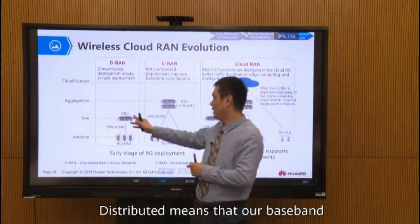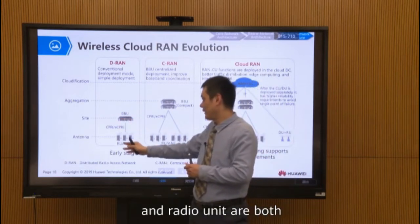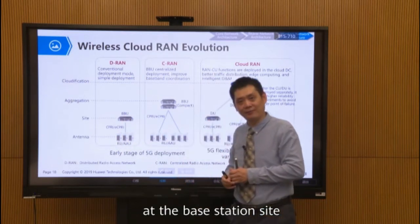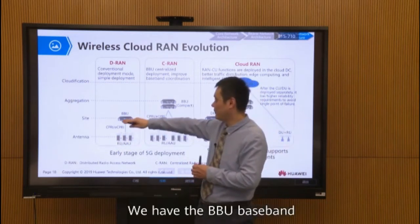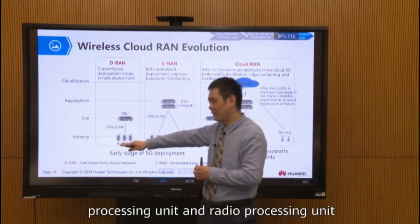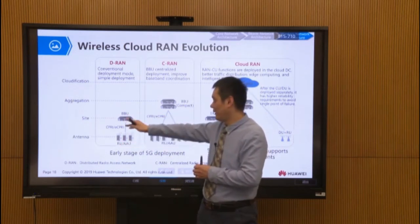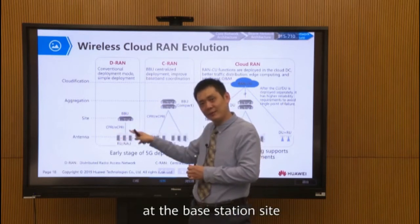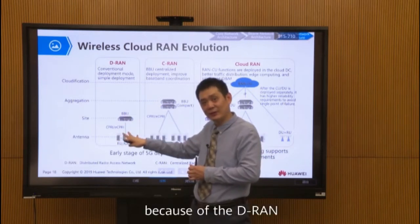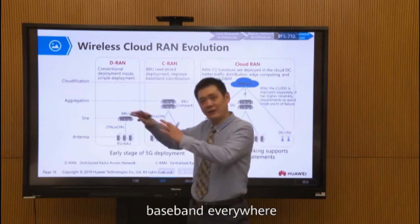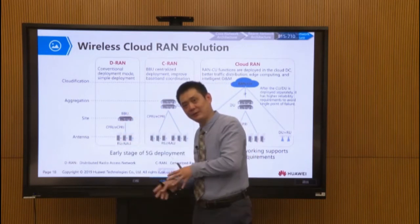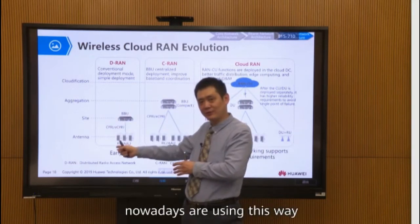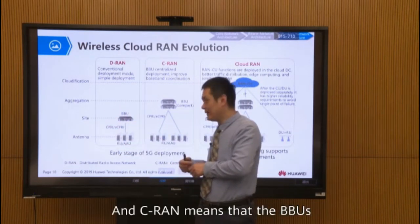Distributed means that our baseband and the radio unit are both at the station site. We have the BBU — Baseband Processing Unit — and a Radio Processing Unit. The baseband is distributed at the base station site for DRAM. All commercial networks nowadays use this architecture.